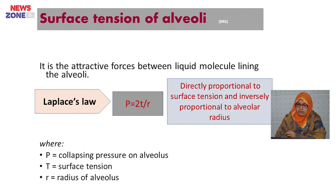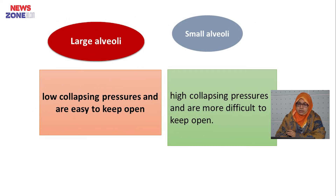Now, the Laplace law: P equals 2T divided by R, where P represents the collapsing force of the alveoli, T is the surface tension, and R is the radius. So the collapsing force is directly proportional to surface tension and inversely proportional to the radius of the alveoli. Larger alveoli have larger diameter, so low collapsing pressure and are easy to keep open. Small alveoli have high collapsing pressure and are more difficult to keep open.